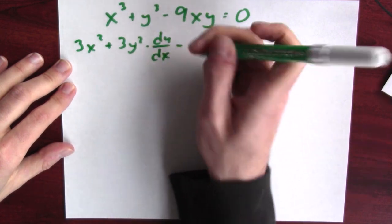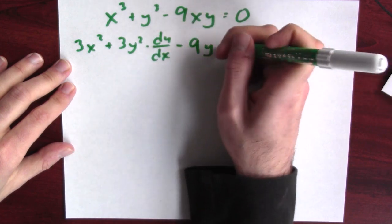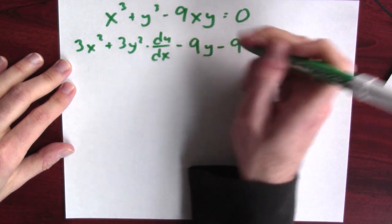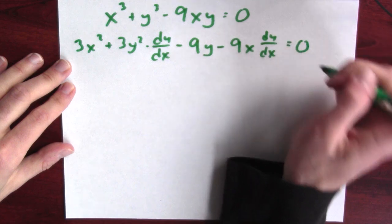Minus, now I've got to differentiate this. It'll be 9 times the derivative of x, which is 1y, minus 9x times the derivative of y, which is dy dx, and that's equal to 0.